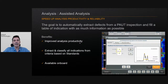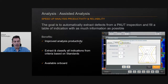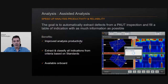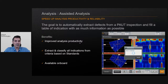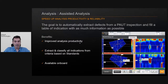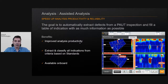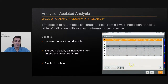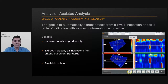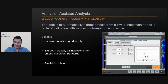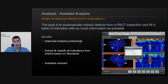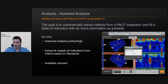Today we're going to talk about the Assisted Analysis. The goal of that feature is to automatically extract indications from a phased array inspection and provide as much information as possible to the Table of Indications. The goal here is to improve the productivity of analysis. It's not to replace the operator — we just want to help you, not replace you. This is available on PC and also on the unit, so if you have a Gecko or Mantis, you can use that feature directly in the field.